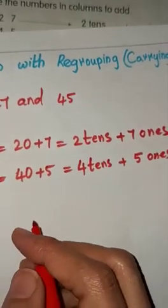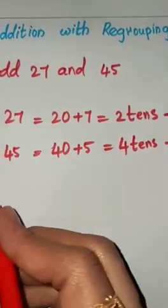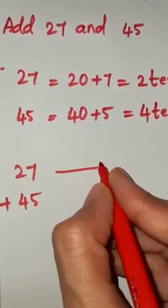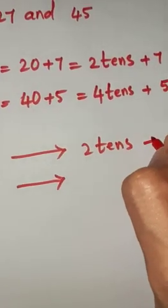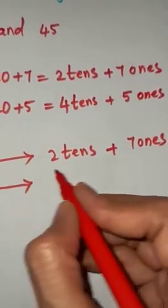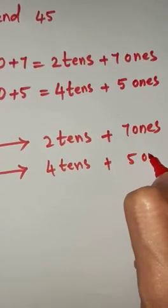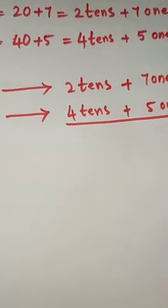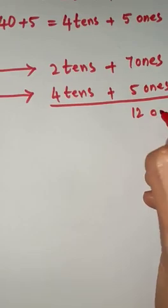Now students, let's write the numbers in the columns to add. 27 plus 45: 2 tens plus 7 ones, plus 4 tens plus 5 ones. Now we have to add the ones first, then tens. 7 plus 5 is how much? 12 — 12 ones.